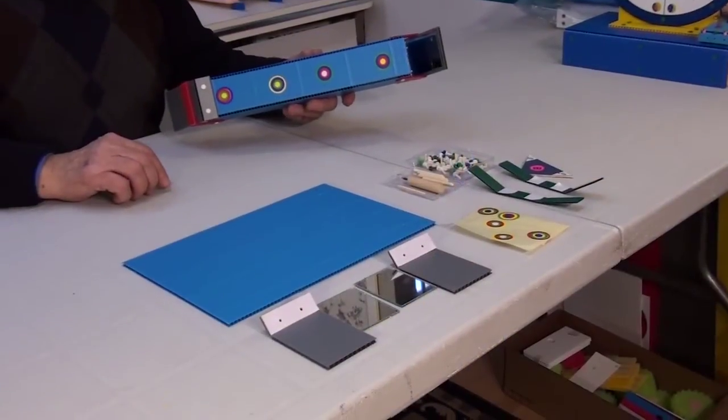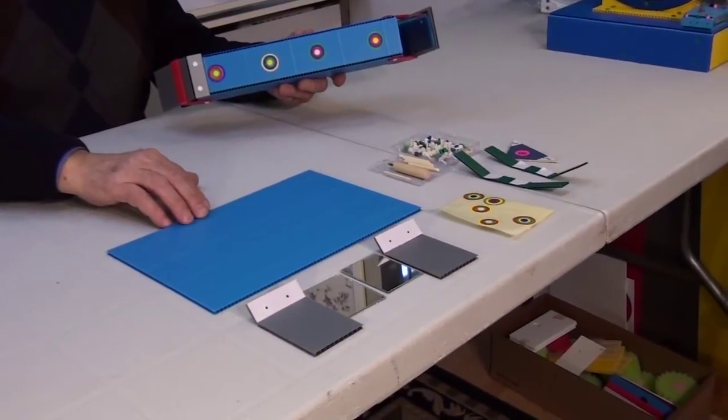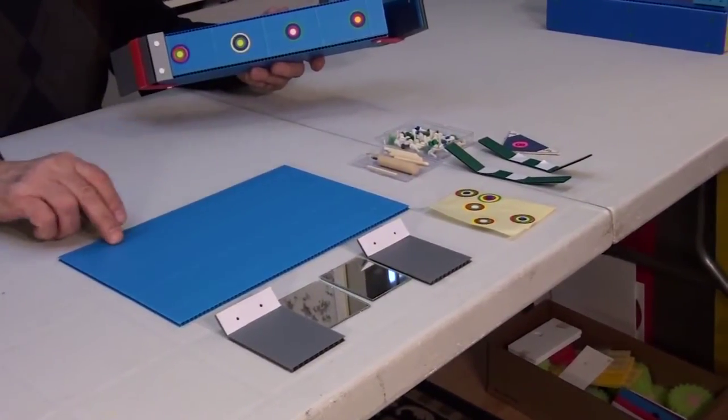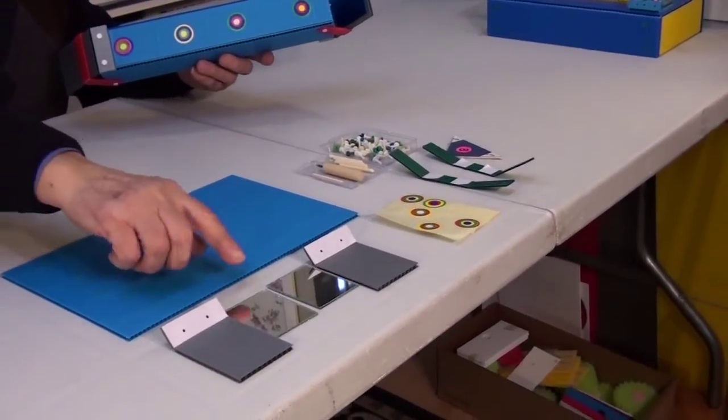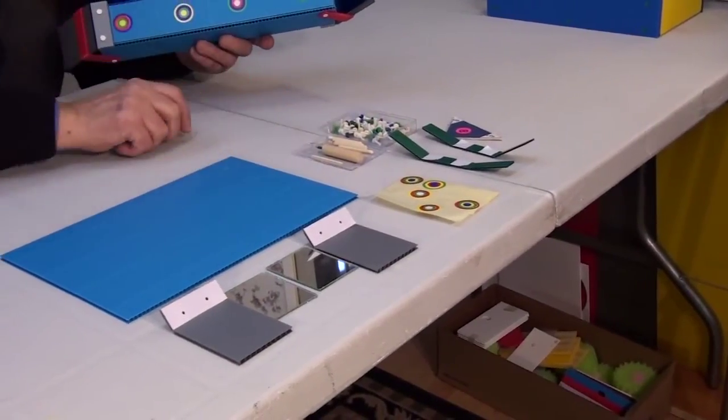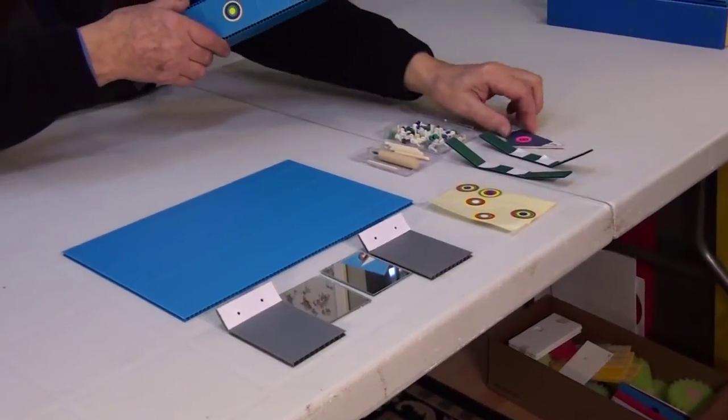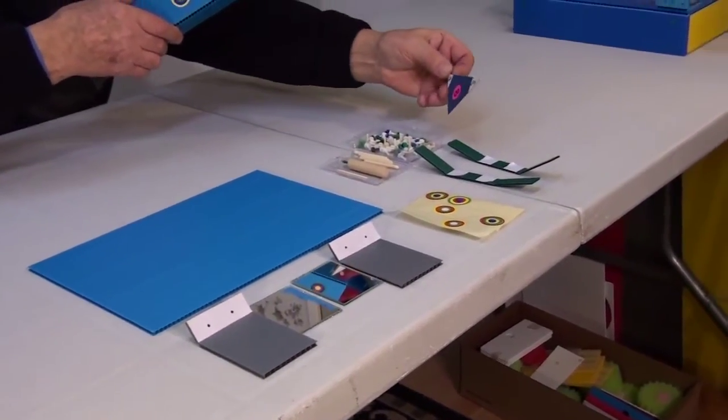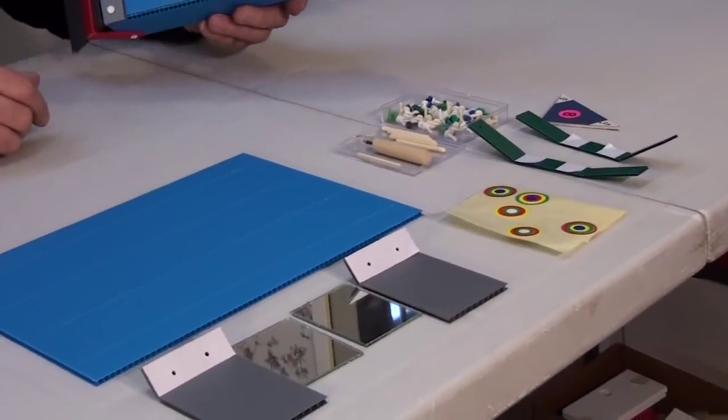To make the periscope we will need the following parts. This scored part will be used to make our tube. We also have two mirrors, two support plates, two straps that will secure the mirrors at a certain angle, the former which will be used to establish the necessary 45 degree angle, and some clips and dowels.